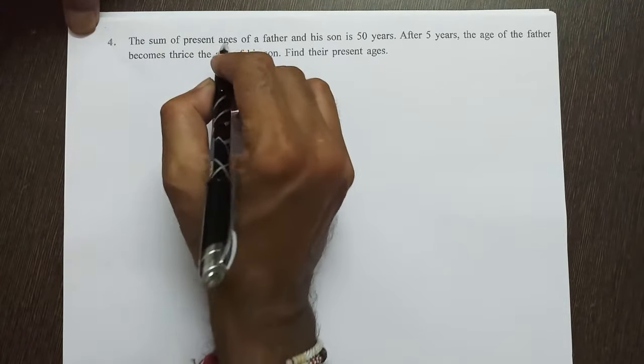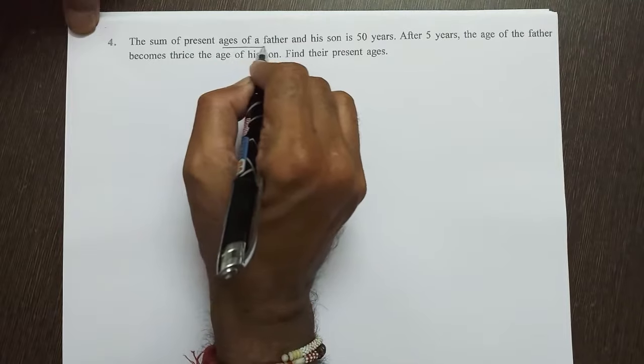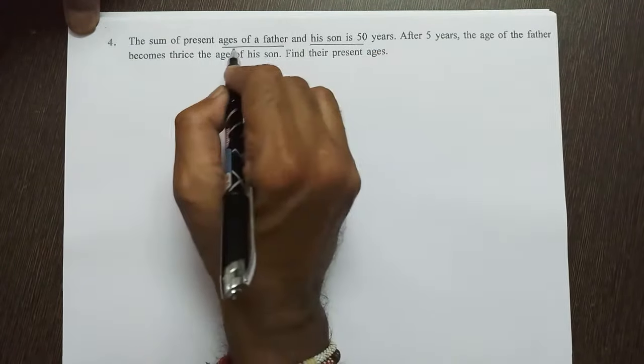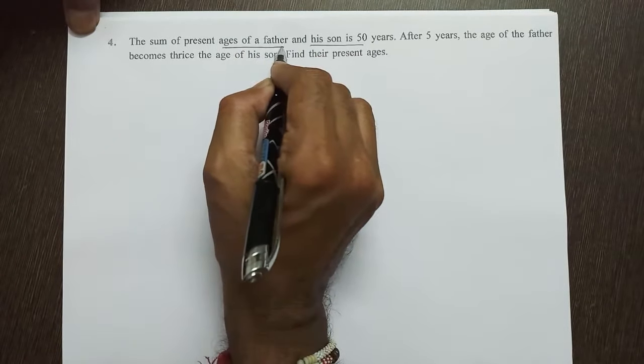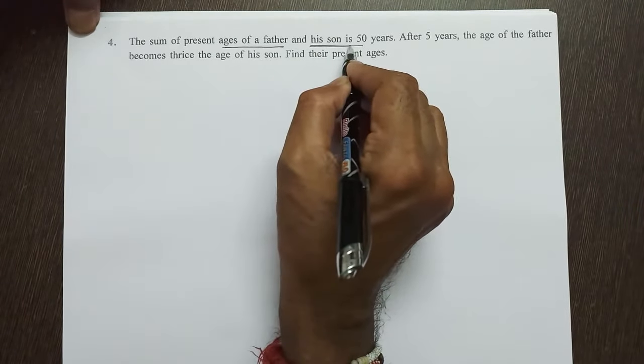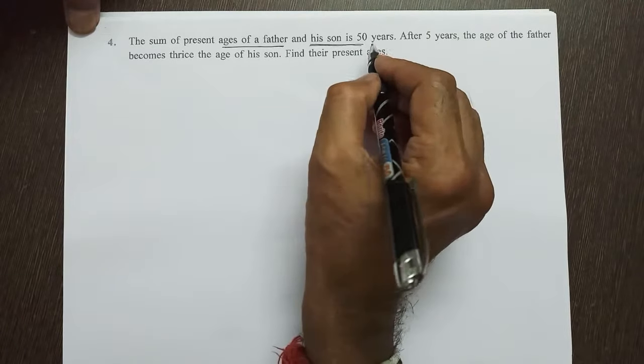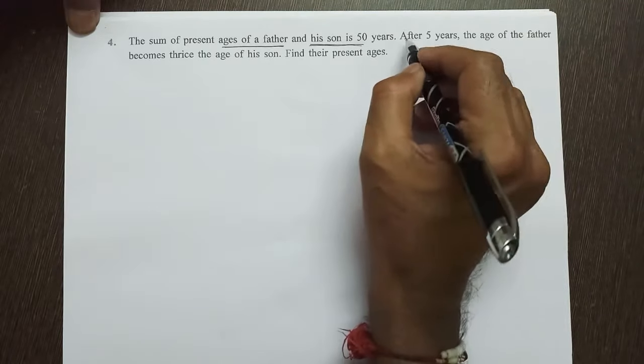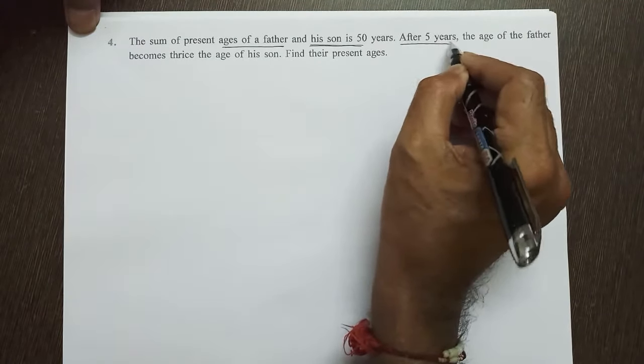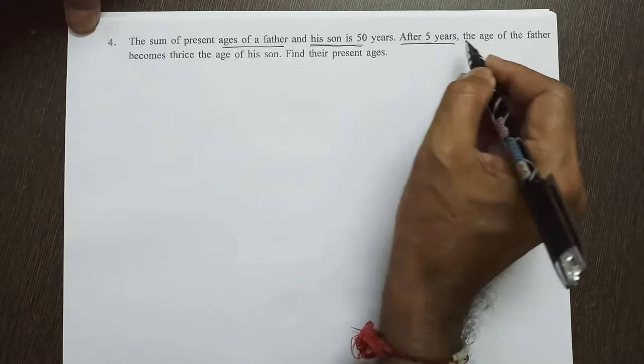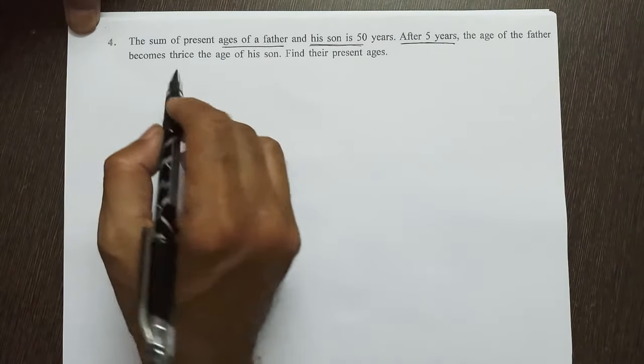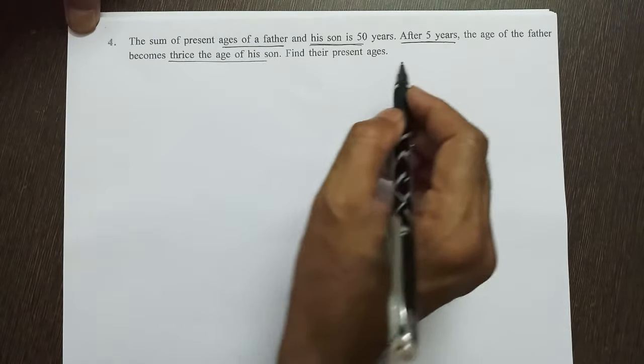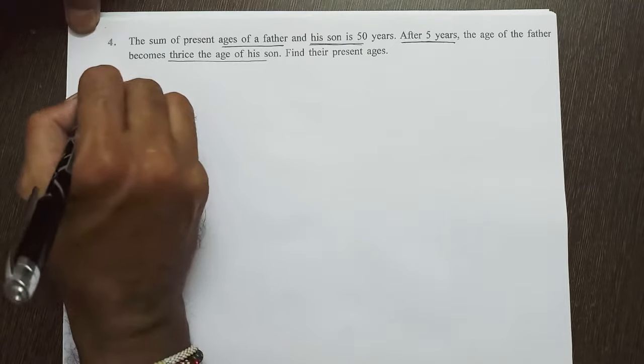The sum of the present age of the father and his son is 50. Here, two persons, father and second person, son, total age is 50 years. After five years, after means later, hence age of father becomes thrice the age of son. Find their present ages. The solution: